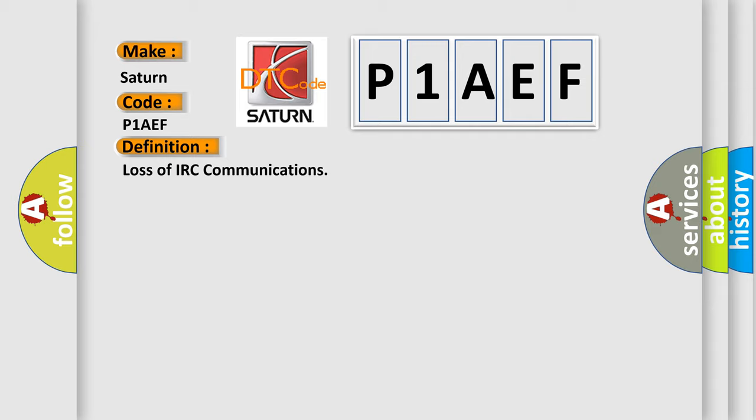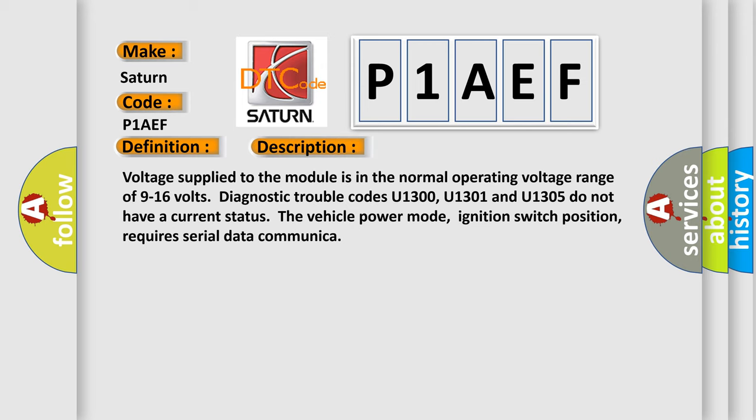And now this is a short description of this DTC code. Voltage supplied to the module is in the normal operating voltage range of 9 to 16 volts. Diagnostic trouble codes U1300, U1301, and U1305 do not have a current status. The vehicle power mode, ignition switch position, requires serial data communication.